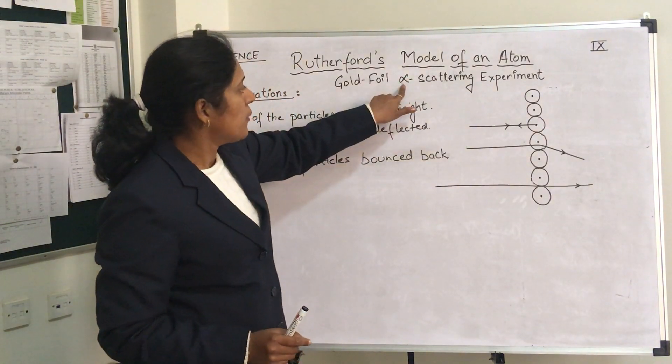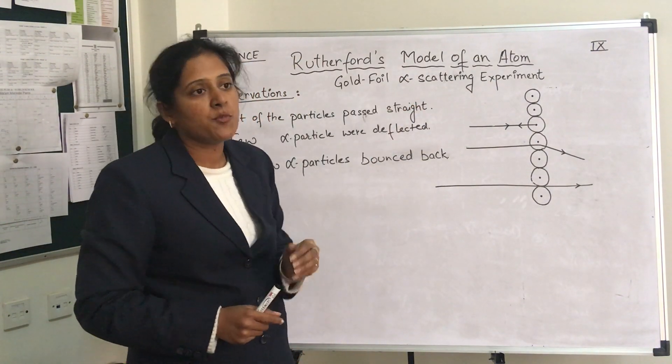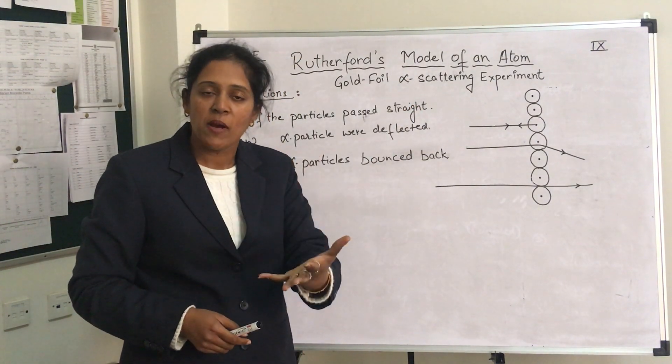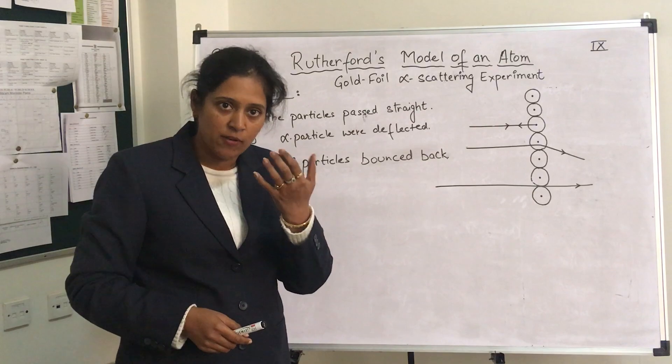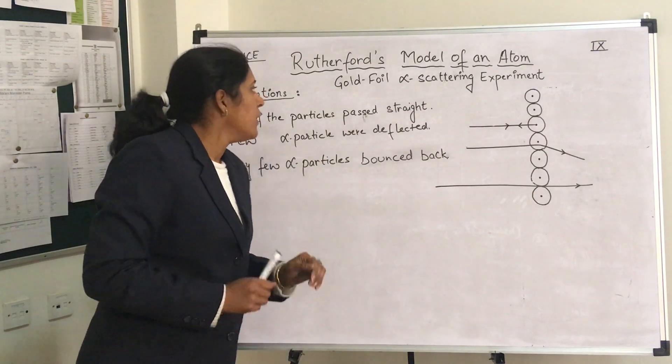The second thing is the reason for selection of alpha particles — because these are heavy particles, they have large mass, and they are positively charged.